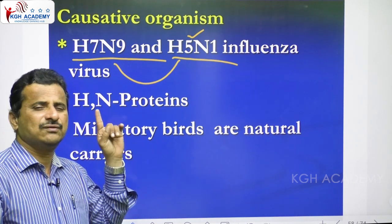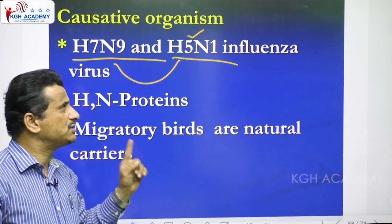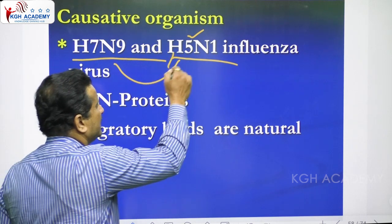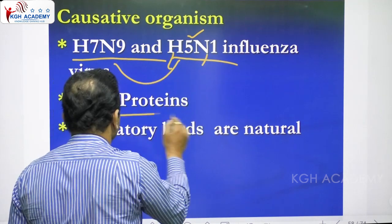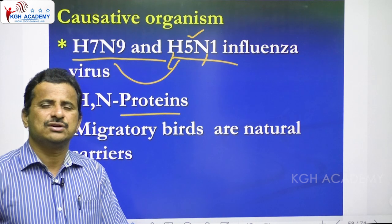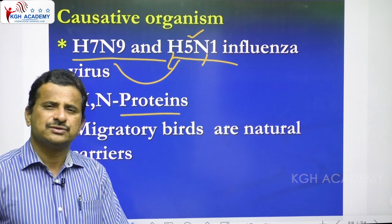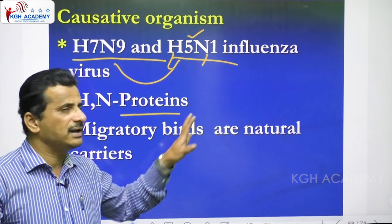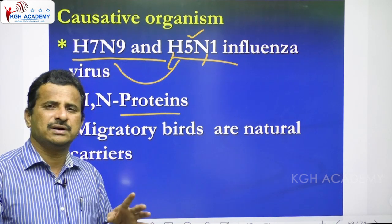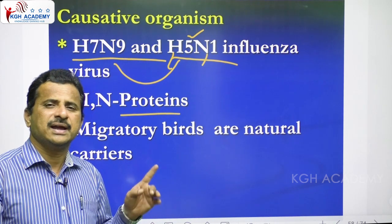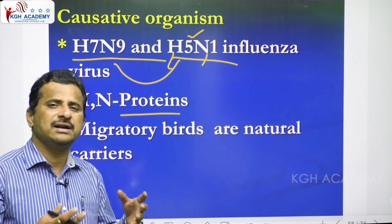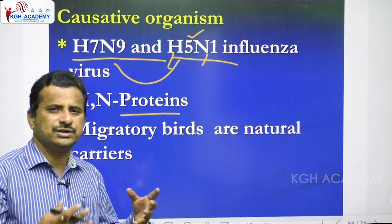In H5N1, H and N refer to proteins. H stands for hemagglutinin and N stands for neuraminidase. Based on these proteins, viruses are given their names. There are many modifications in H and N, giving rise to H2N2, H3N3, H4N4, and many other varieties of subtypes.